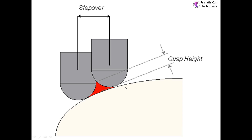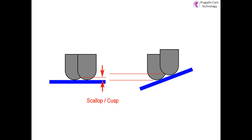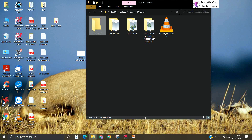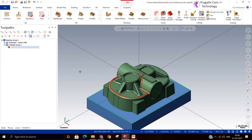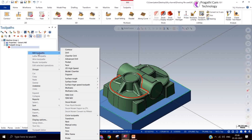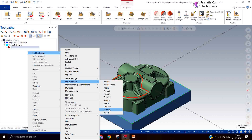Now we can see how the scallop height looks on an angular or profile surface. The scallop height decides the surface finish, but in actual cases it will not look as large as shown — it is zoomed for understanding. The diagram shows the scallop height in both directions: horizontal and inclined. Without this knowledge, going for a scallop toolpath would be incomplete, so now we will go to Mastercam and perform the scallop toolpath.